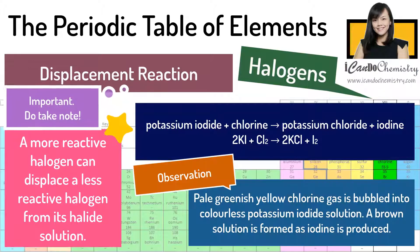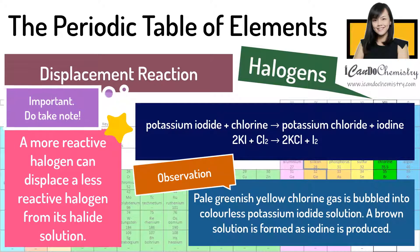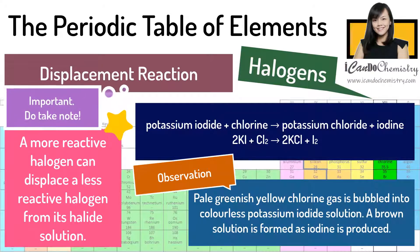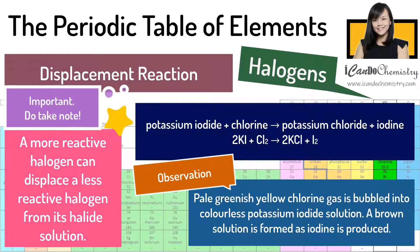An interesting observation can be made in this reaction. When greenish-yellow chlorine gas is bubbled into a colorless solution of potassium iodide, a brown solution is observed due to the formation of iodine.